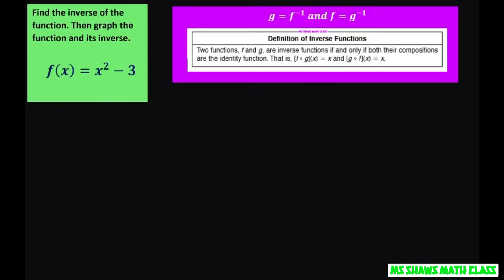So let's find the inverse first. What we're going to do is change the notation. You have f of x and change that to y because we got to interchange the x with the y. So let's do that. So we have x equals y squared minus 3. Once you do that, that is your inverse.